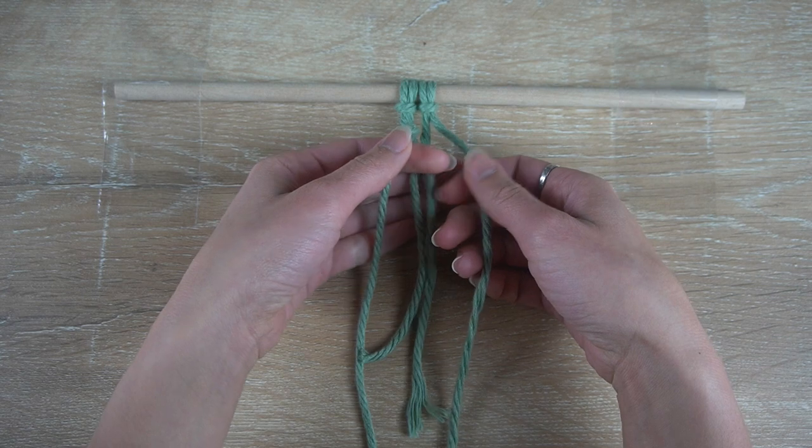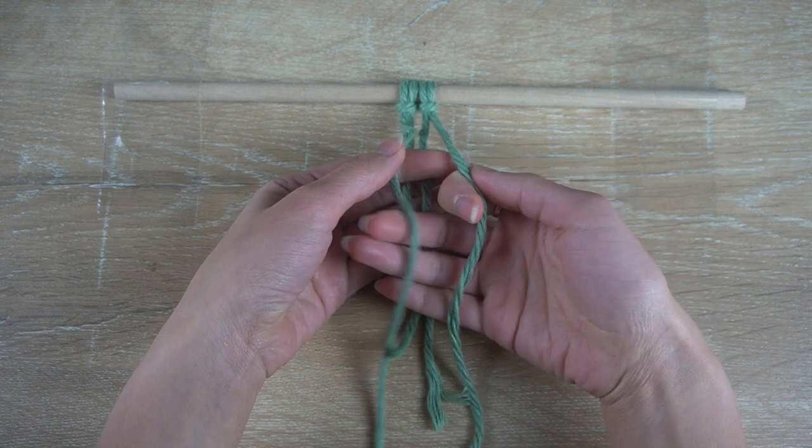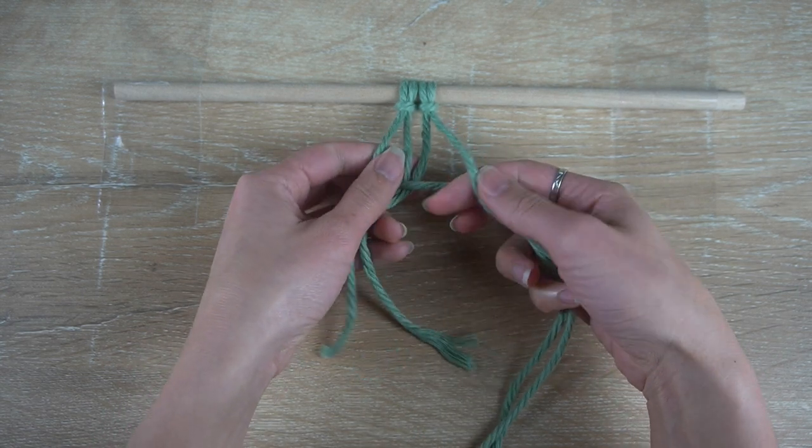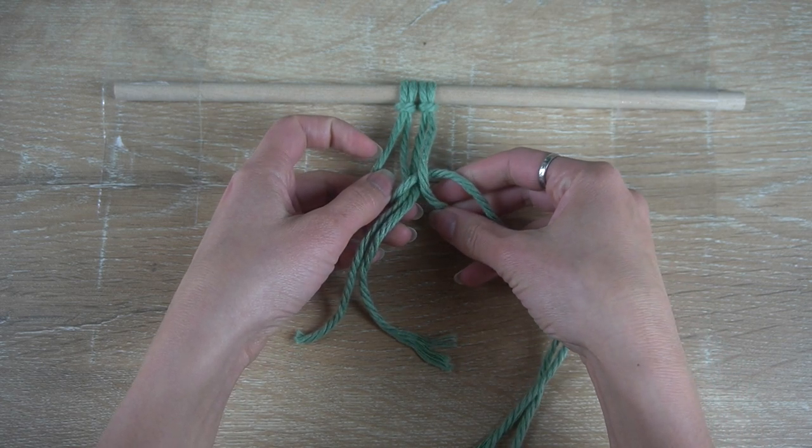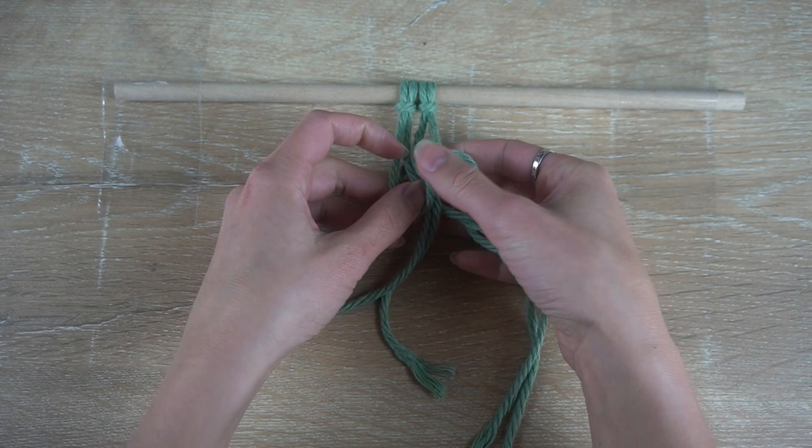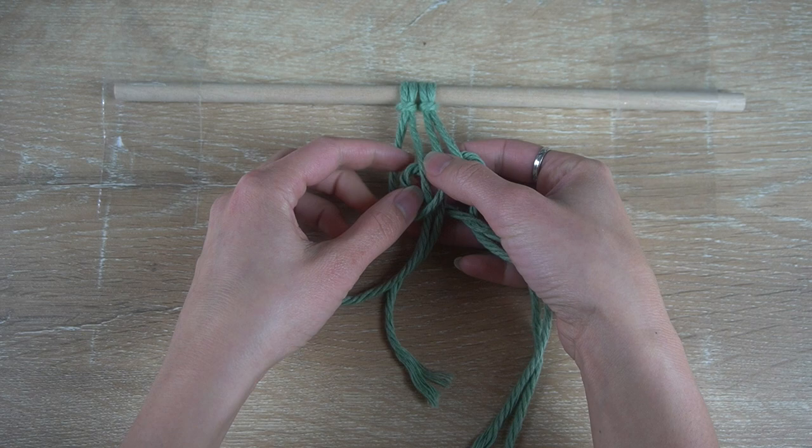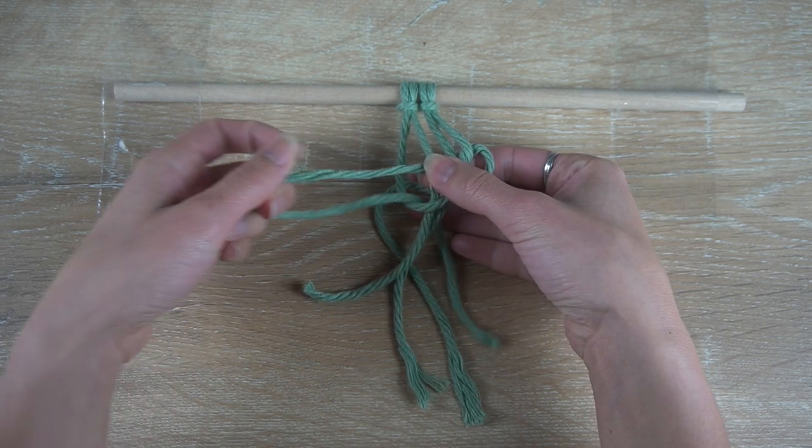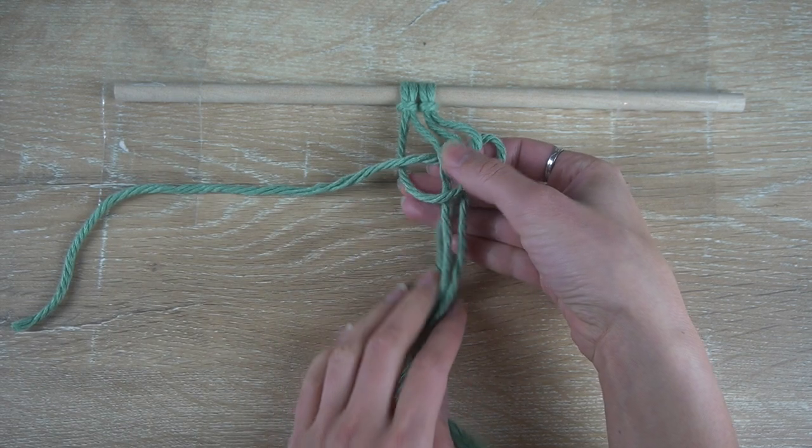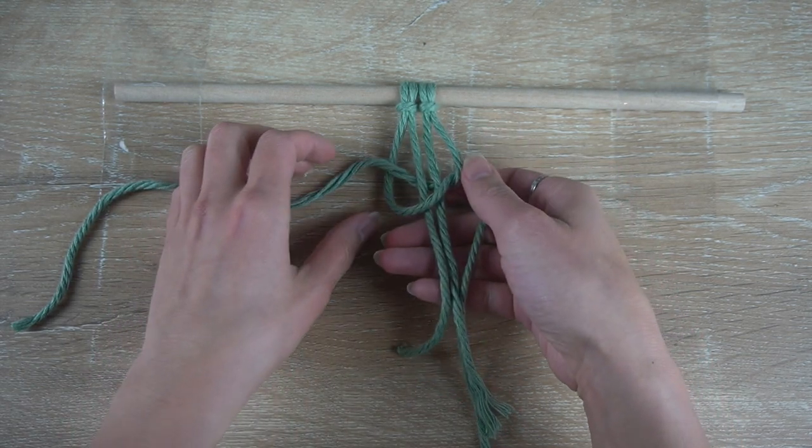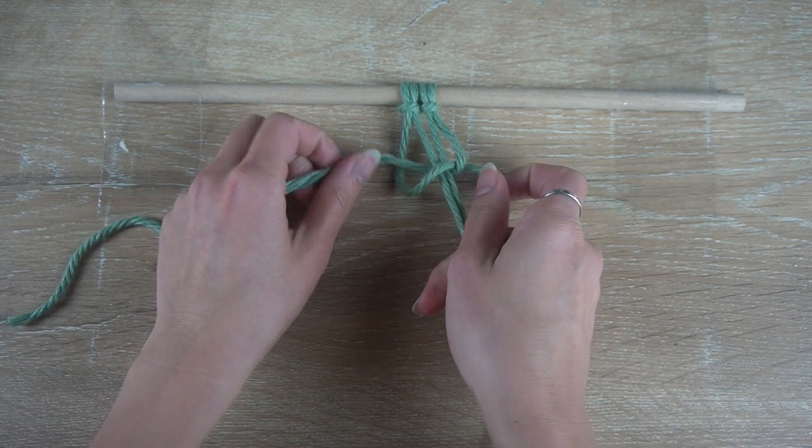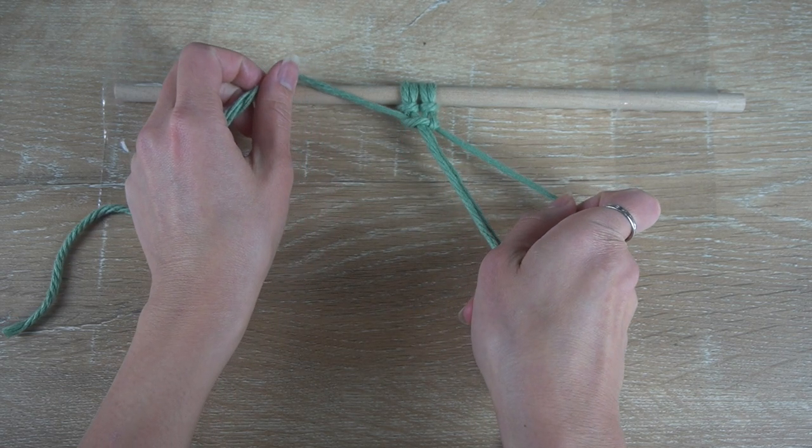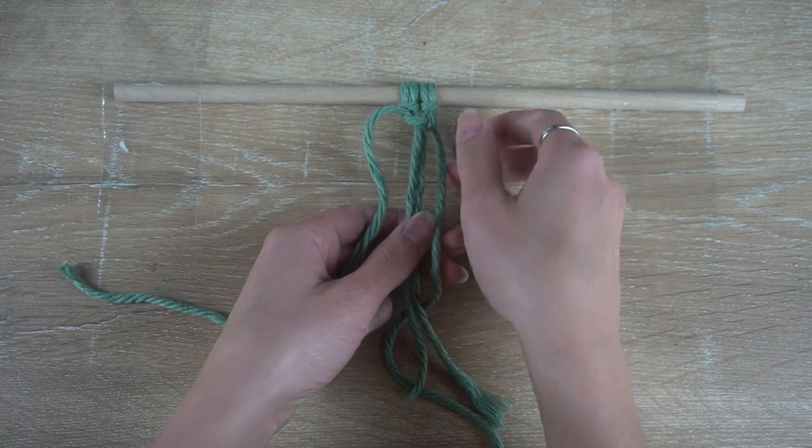Starting with the outer two cords, the far left and the far right cord, make a half knot folding the left cord over to the right. Then take the right cord through the back and pull it through on the left side. Pull on the cord ends to tighten the knot. You have now made one right half knot.